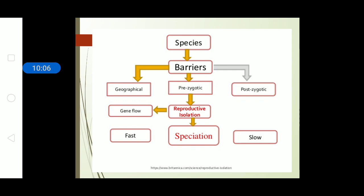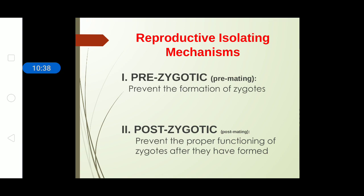A flowchart summarizes the entire discussion: species are separated by barriers of three types — geographical, prezygotic, and postzygotic. The prezygotic barriers include reproductive isolation, which gives rise to a new species; if gene flow is redirected it can result in faster speciation. Postzygotic barriers give rise to slow speciation. Broadly, reproductive isolation mechanisms are classified into prezygotic — mechanisms that prevent two animals from forming a viable individual before mating — and postzygotic, which refers to barriers after mating.